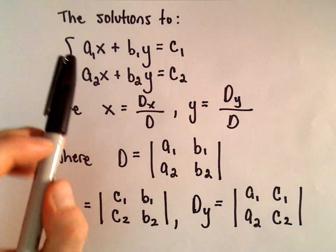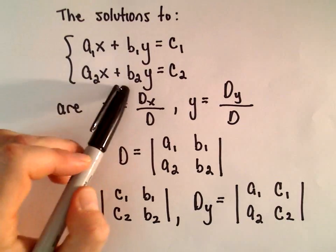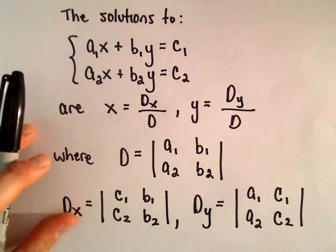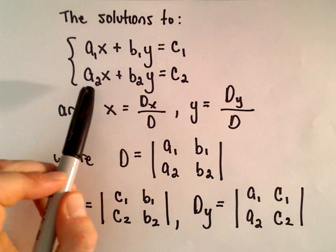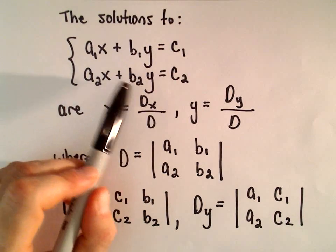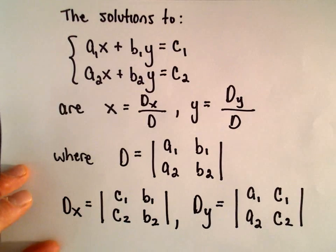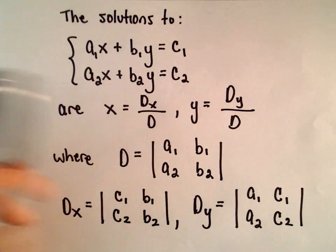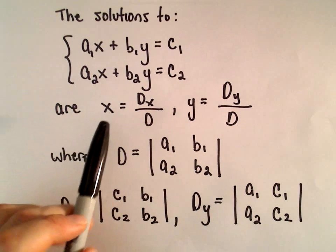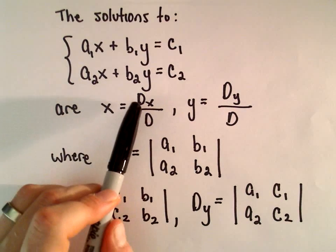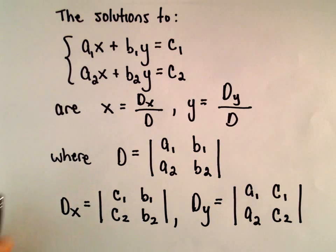Suppose we've got — instead of little a sub 1 and a sub 2, I'm going to say a1, a2, b1, b2, etc. So we've got a1x plus b1y equals c1, and our other equation, a2x plus b2y equals c2. The a's, b's, and c's are all just constants. The solutions are going to be x equals d sub x over d, and y equals d sub y over d.